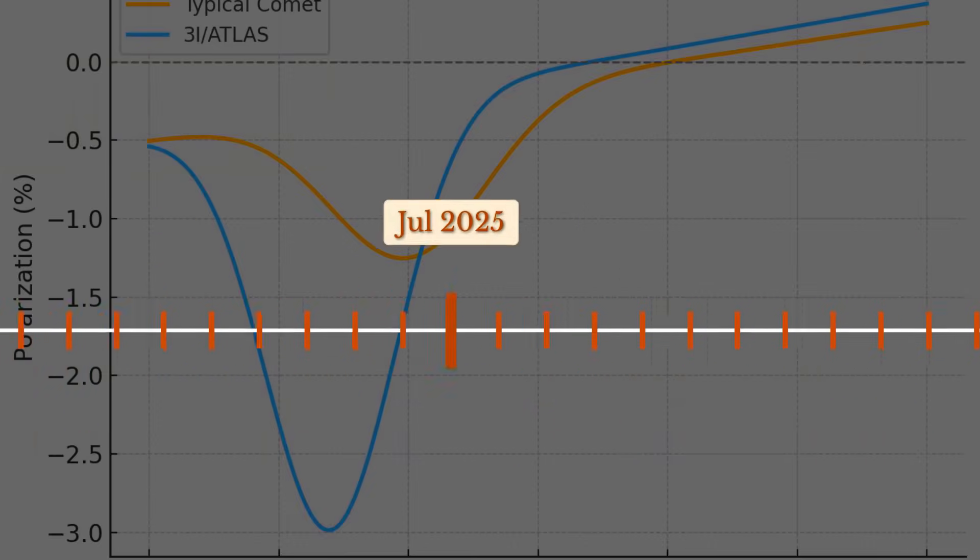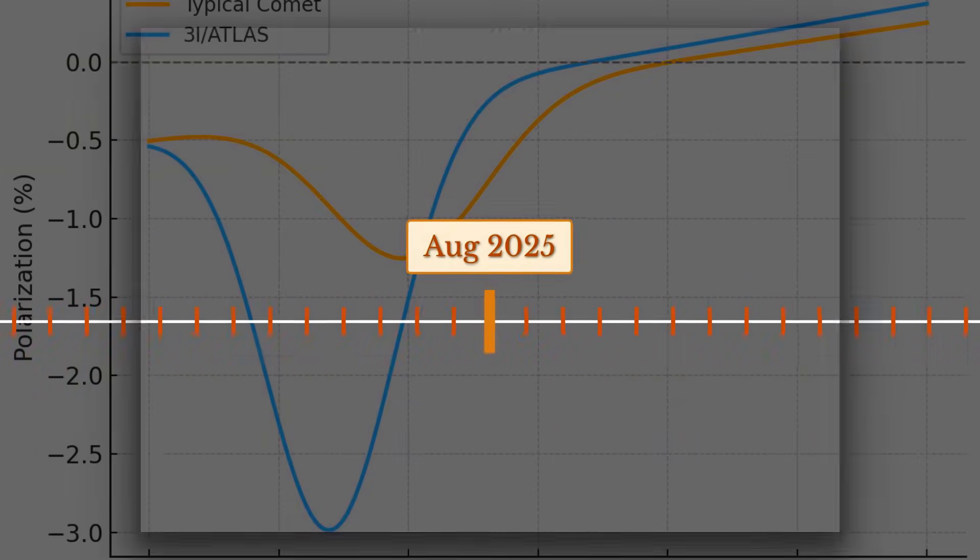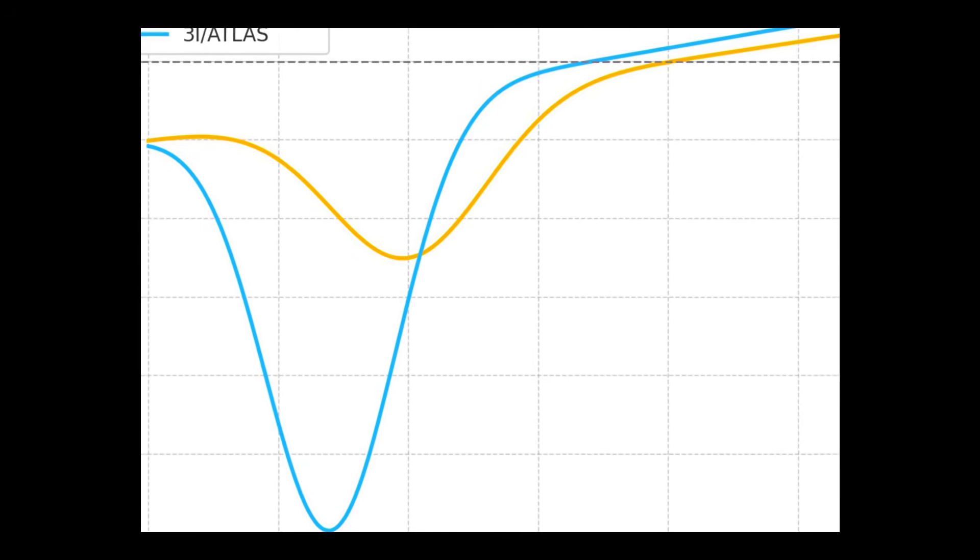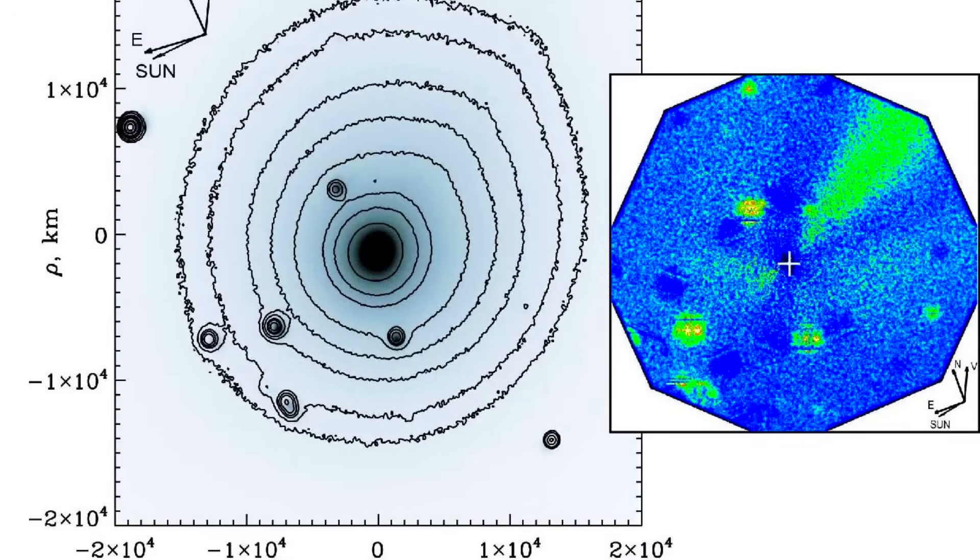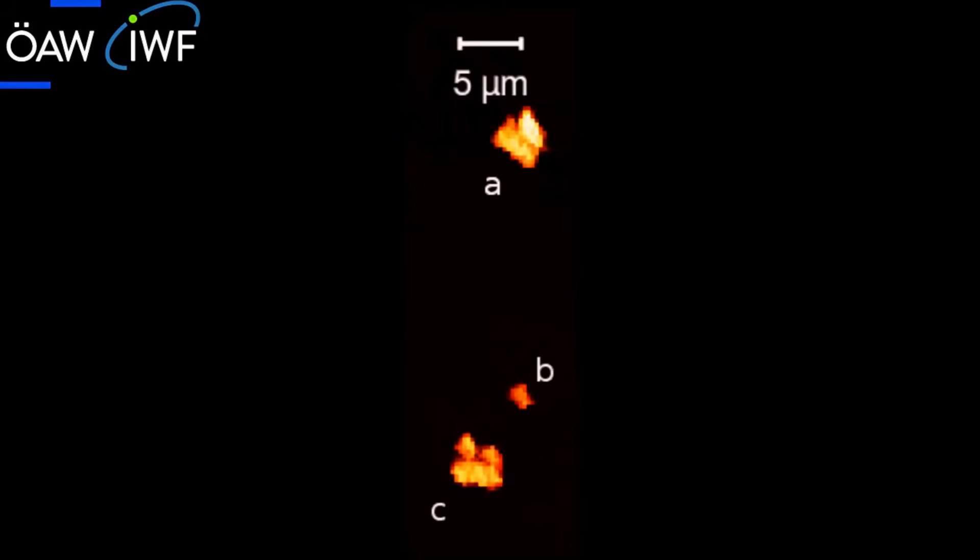The data from July and August 2025 show the polarization dipping below minus 6%, an extreme value that stands out even among the oddballs catalogued over decades. The uniformity near the nucleus with abrupt swings further out hints at a layered coma. Dense, fine dust close in, possibly mixed with more complex, porous aggregates farther from the core.